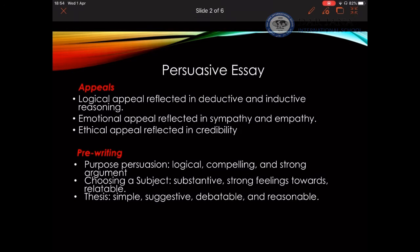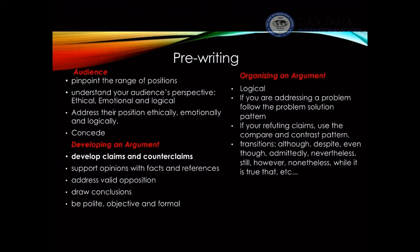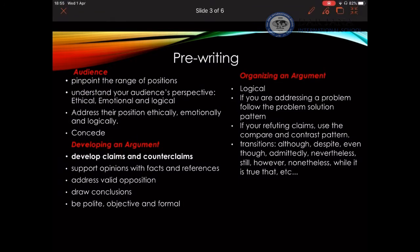The pre-writing section is divided into different parts. Before you get started, you need to address the purpose of the persuasion — you need to be logical, compelling, and have a strong argument. When choosing the topic, it has to be substantive, you need to have strong feelings towards the idea, and the topic itself has to be relatable. Your thesis has to be simple, suggestive, debatable, and reasonable.